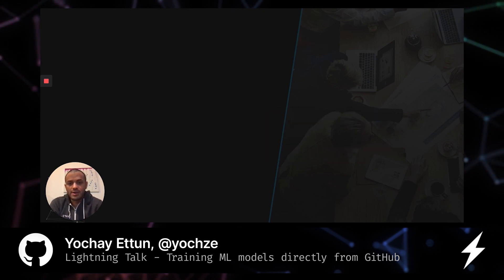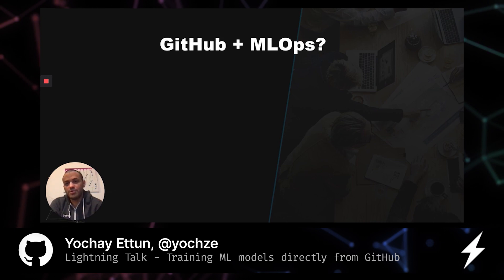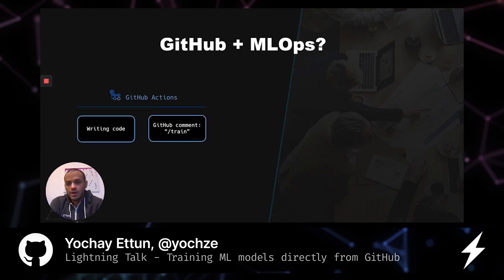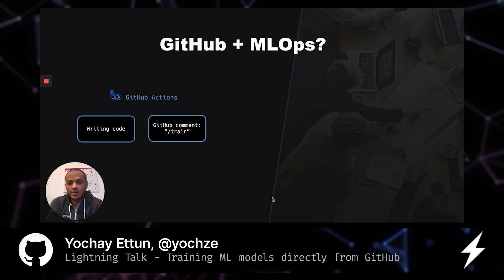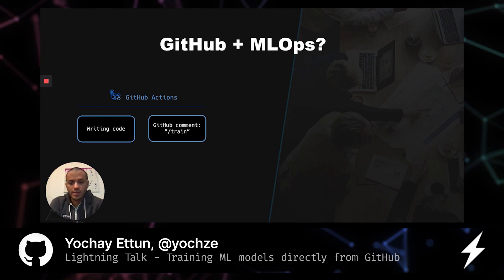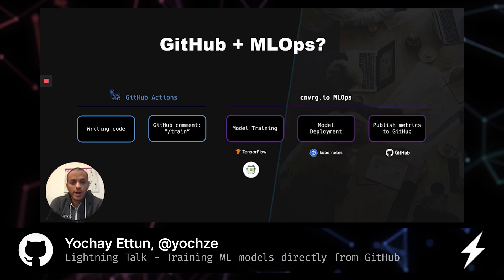What we're suggesting in this talk is a simple way to train models directly from GitHub — a GitHub plus MLOps solution. It all starts with code. You write code, you push it back to GitHub, you create a pull request, and then with the slash train comment on your GitHub pull request, it will automatically trigger a model training pipeline.